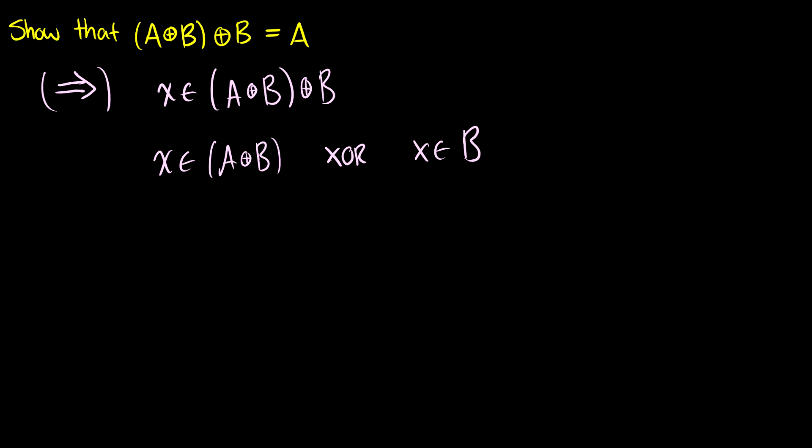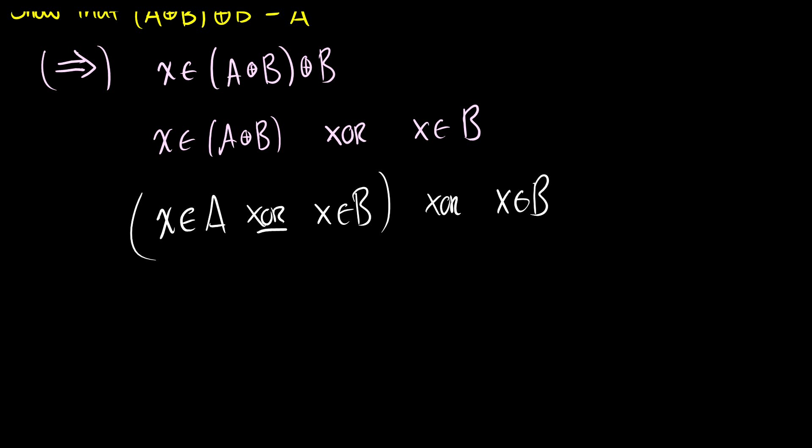Okay, so we're going to have x is an element of A x or x is an element of B x or x is an element of B. So in this case, we could distribute and find some properties, but really, we should take this by cases now.